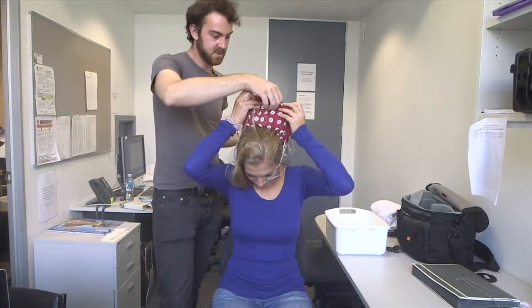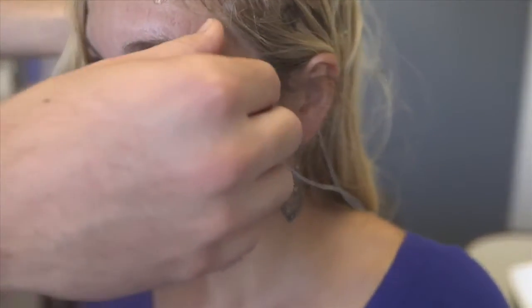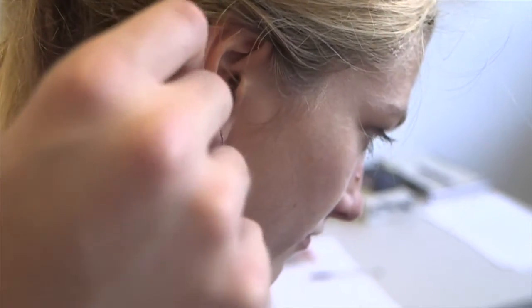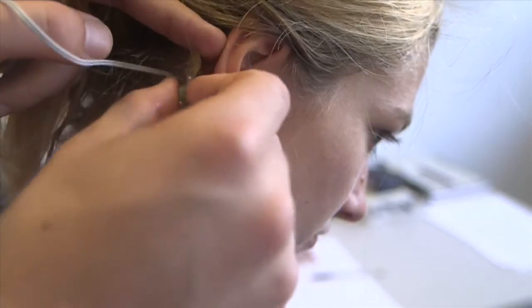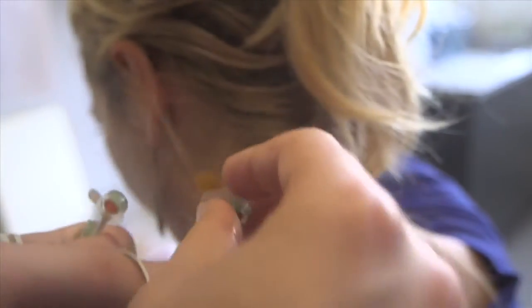The first step is to carefully remove the cap from the participant's head, and then peel off the external electrodes. Never pull on the cables to do this. Instead, grab the head of the electrodes or use the little flap on the adhesive rings. Also, be careful not to pull your participant's hair.